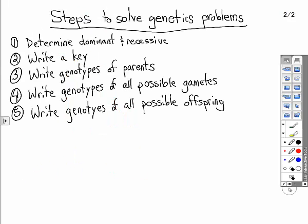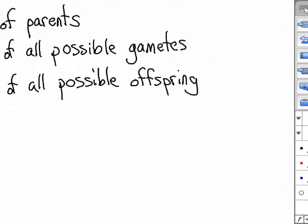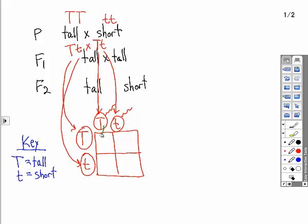The next step is to write the genotypes of all the possible offspring. If we use a Punnett square, they line up just right, and it's easy to write the genotypes of all possible offspring. If this sperm fertilizes this egg, you get an offspring that's homozygous dominant, big T, big T.